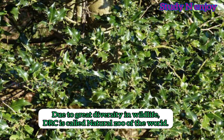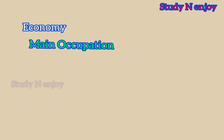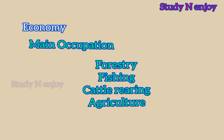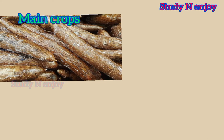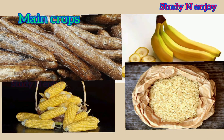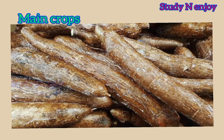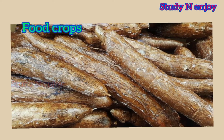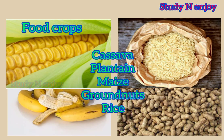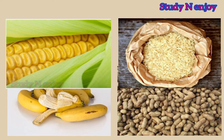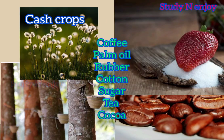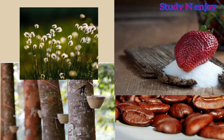The people of the DRC are engaged in forestry, fishing, cattle rearing, and agriculture. Their main occupation is agriculture, even though the methods are traditional and primitive. The main food crops grown here are cassava, maize, banana, and rice. Cassava is the staple food of the people in this region — in India, cassava is known as tapioca. The main food crops include cassava, plantains, maize, groundnut, and rice.